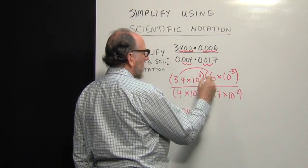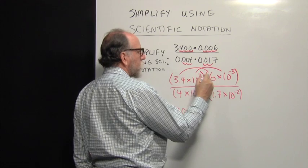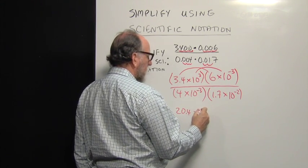And then 10 to the third times 10 to the negative third, multiply those two powers. They have the same base, so we add the exponents. That would be 10 to the zero power.